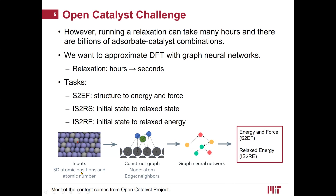As illustrated in the figure, we take 3D atomic positions and atomic number as input and construct a nearest neighbor graph for a graph neural network to predict the energy and force of the structure, or directly predict its corresponding relaxed energy. There are three tasks associated with the dataset: S2EF (structure to energy and force), IS2RS (initial state to relaxed state), and IS2RE (initial state to relaxed energy).